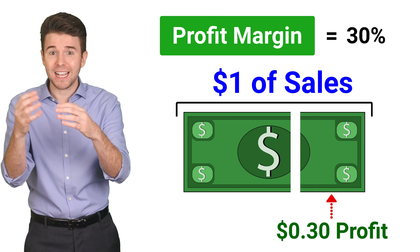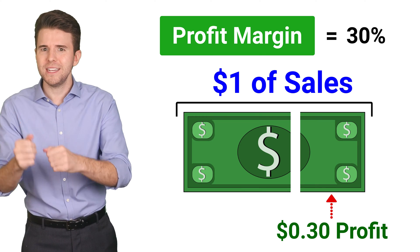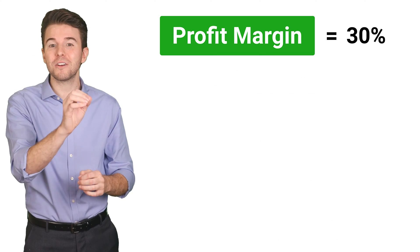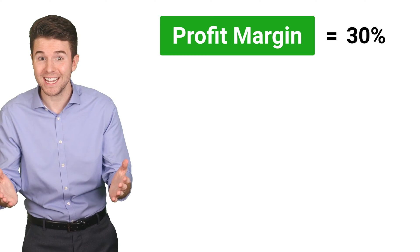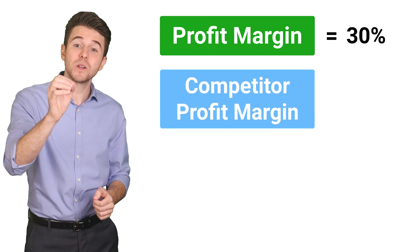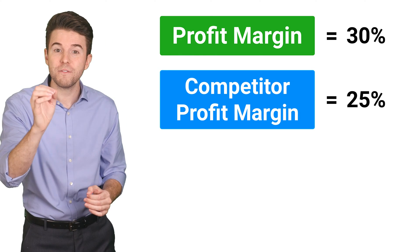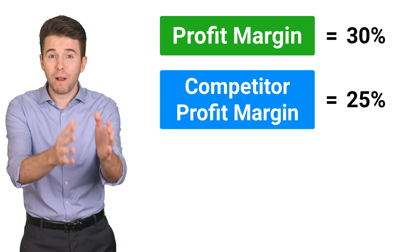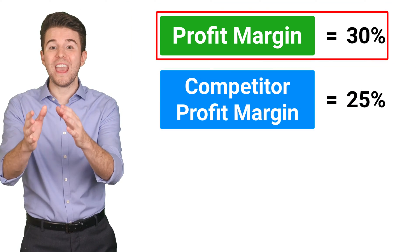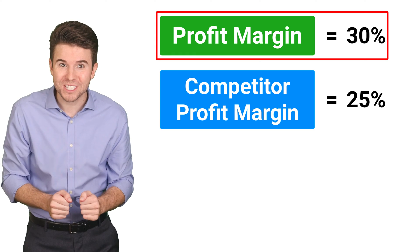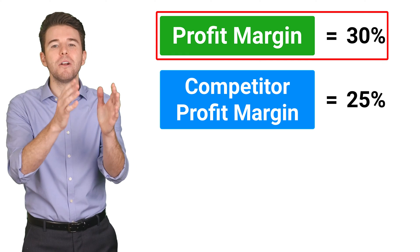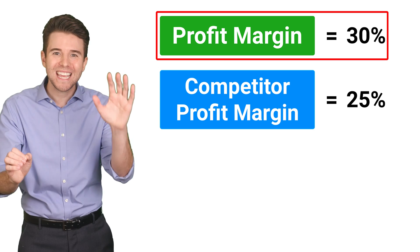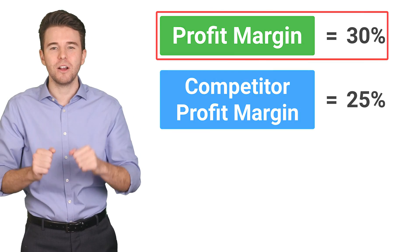But how do we know if this is good in the context of the industry? This is where a competitor comparison comes in handy. Assume a competitor has a 25% profit margin. Based on profit margin, our company with a 30% profit margin is better able to earn more income from each dollar of sales.